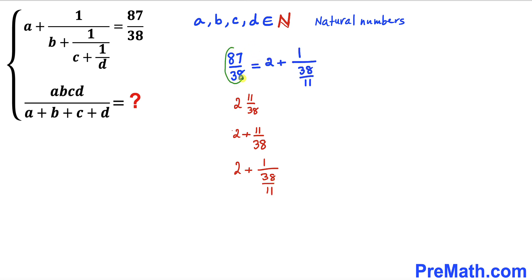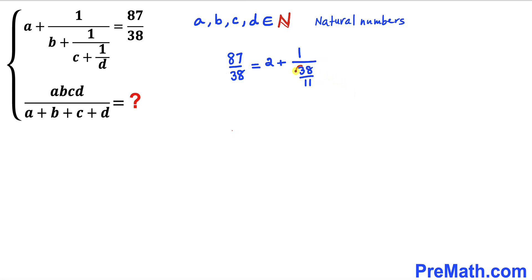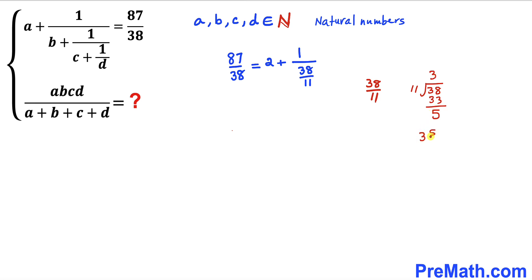So 87 divided by 38 can be written as 2 plus 1 divided by (38 divided by 11). Now let's focus on the fraction 38 divided by 11. Performing the division: 38 divided by 11 goes 3 times, giving us 33, with a remainder of 5. So this can be written as the mixed number 3 and 5 over 11, or equivalently 3 plus 5 divided by 11.